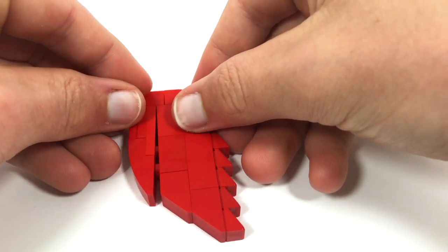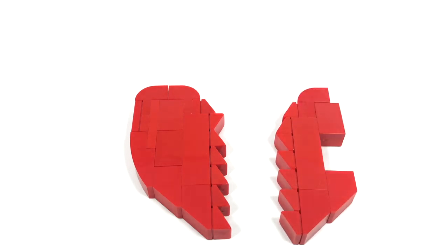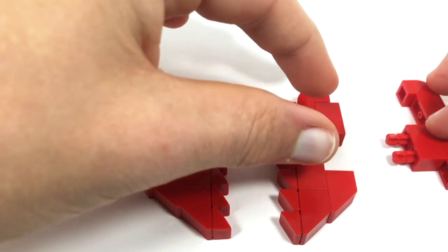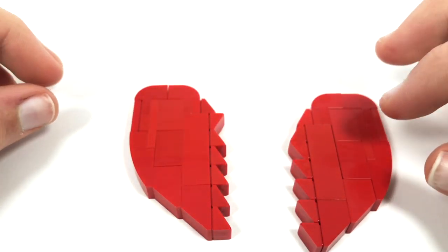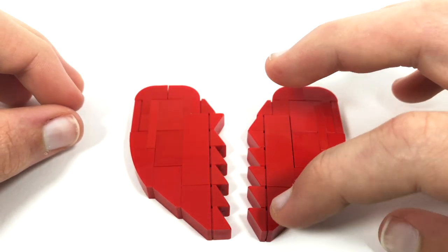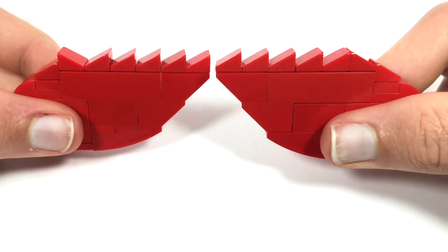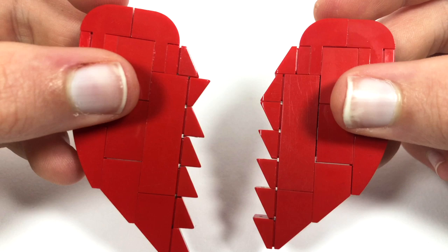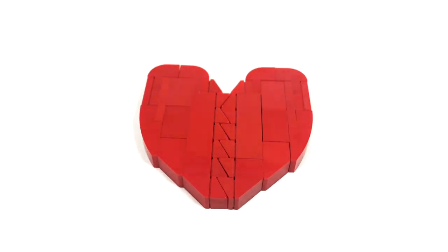Once you have that section, you can go ahead and make another section using the exact same techniques. So this will fit on here just like that. And as you can see, the only difference here is the cheese wedges are in a slightly different pattern. So to build that half, make sure to remember that pattern. And then once you've got the two together, you can either have a whole heart or you can break the heart.